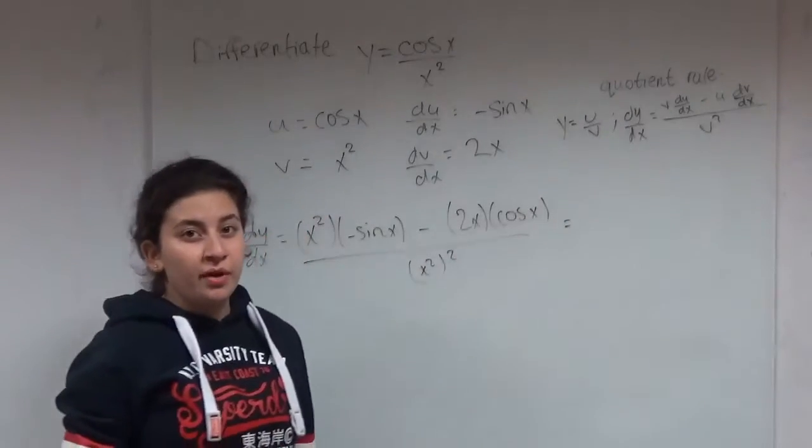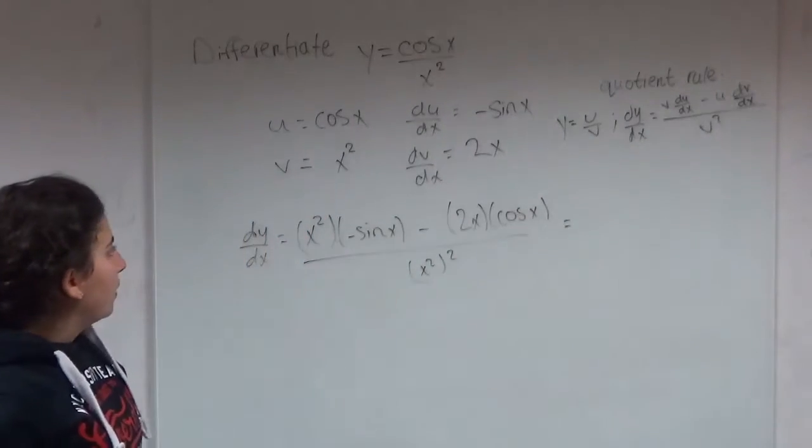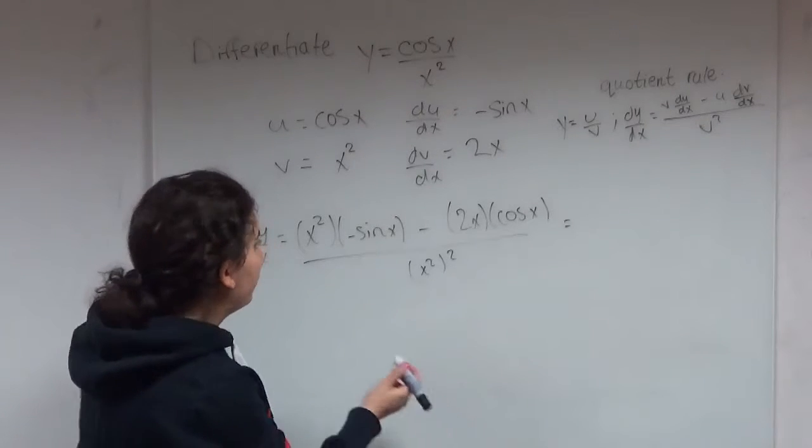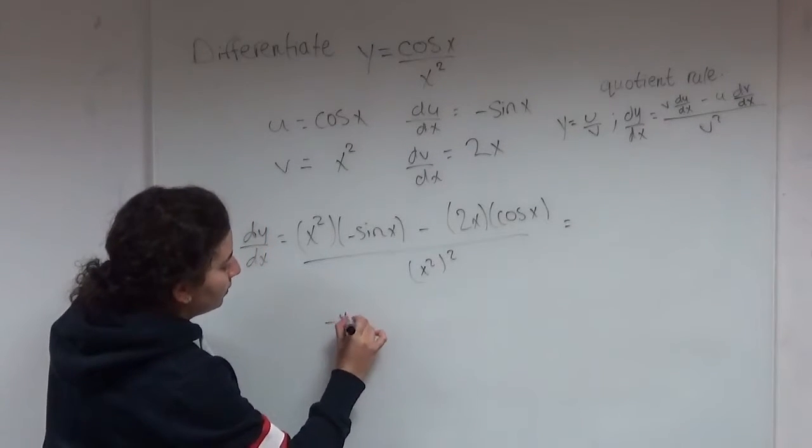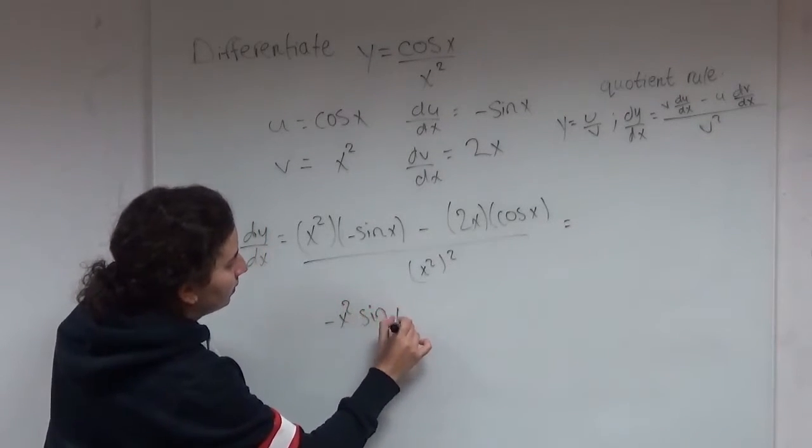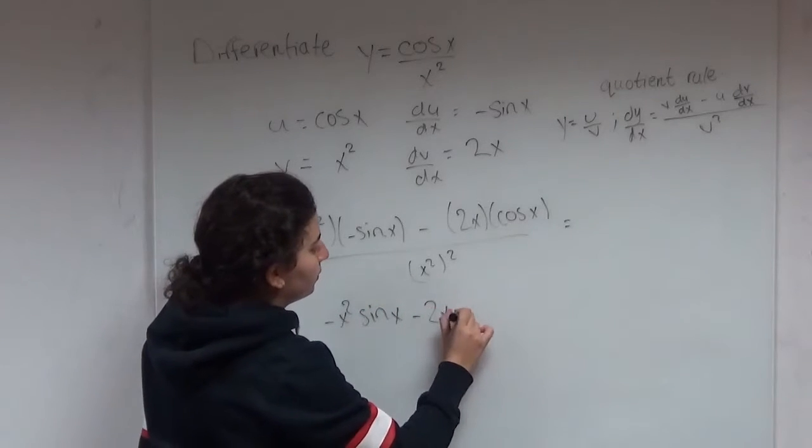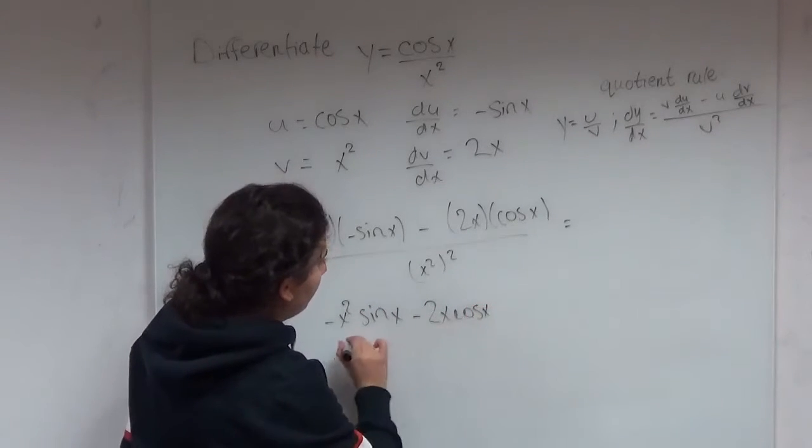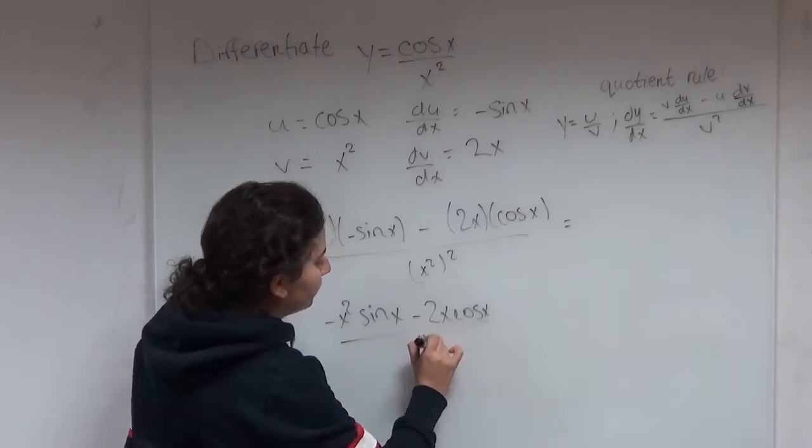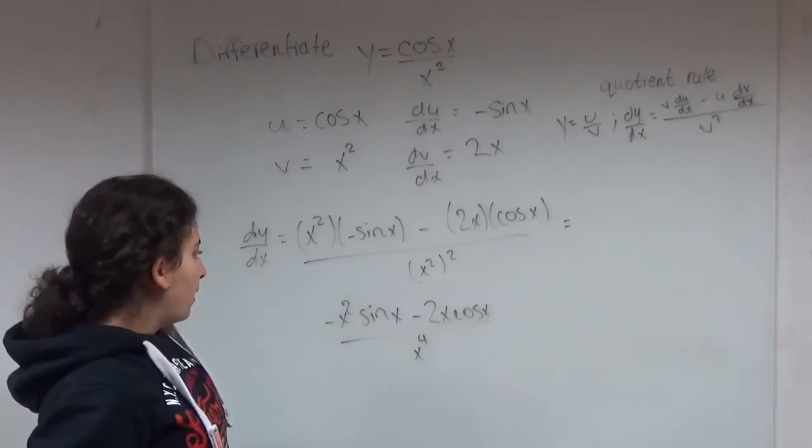Always remember to simplify your answer. So we could just multiply the brackets. So minus x squared sine x minus 2x cos x divided by x to the power of 4.